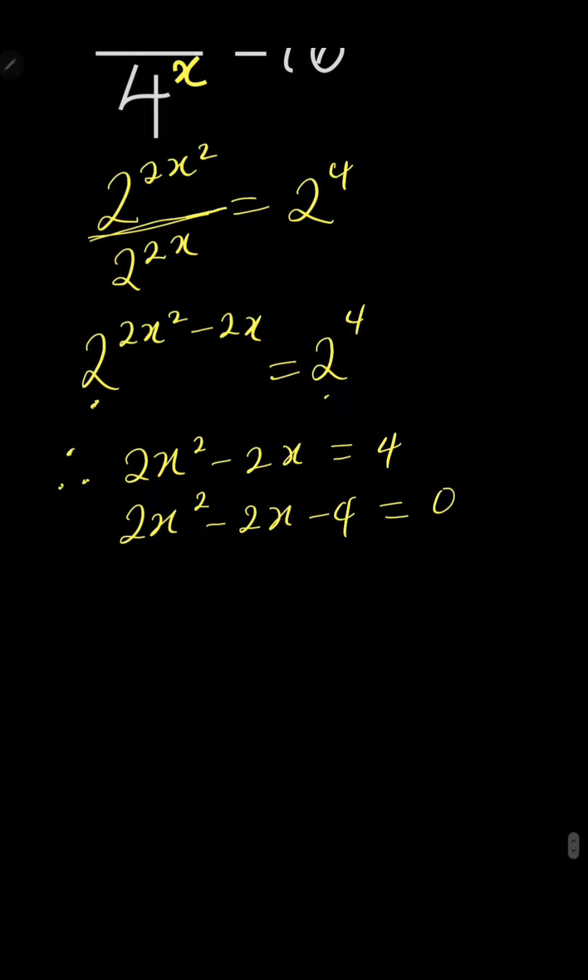Now we can divide by 2 because 2 divides everything. When you do that, we are left with x squared minus x minus 2 equals 0.